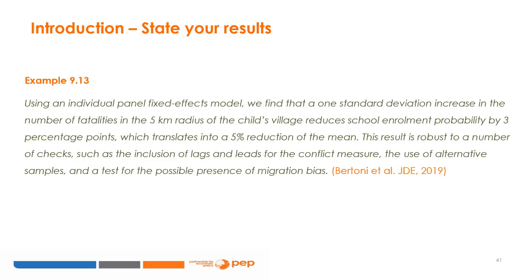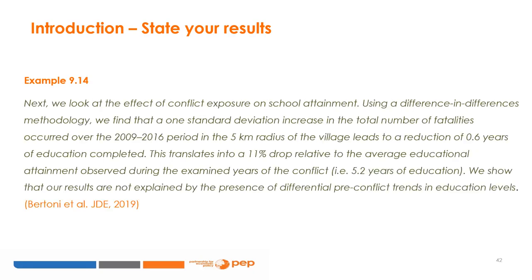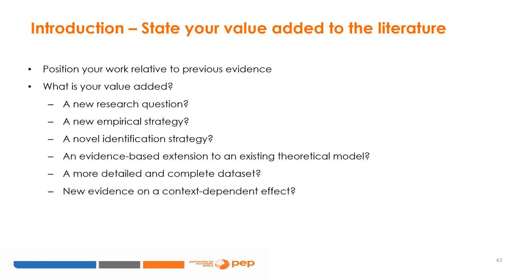Both of these examples are drawn from Bertoni et al.'s 2019 paper published in the Journal of Development Economics. The value added is what your paper contributes above and beyond the existing literature. It is important to position your work relative to previous evidence. This section of your introduction should consist of two parts, both of which should be brief. First, discuss previous research that is directly relevant to your paper — the review needs to be topical and include research that employs the same methods you are using, analyzes a similar model, and uses the same dataset.